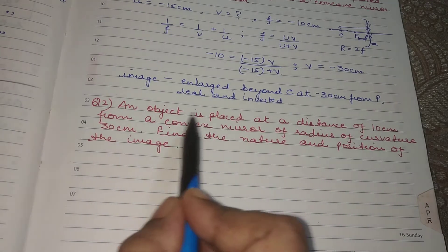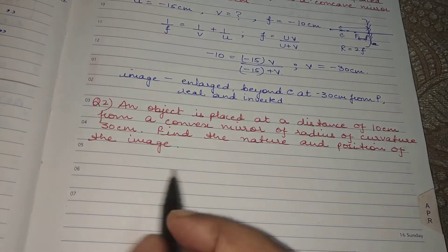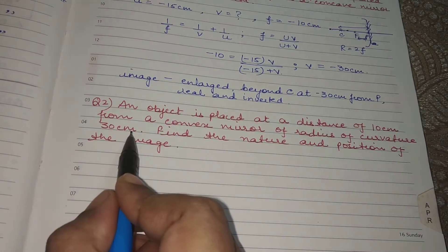The question remains the same, only the mirror is different now. In the question now we have a convex mirror. Radius of curvature is given to you.